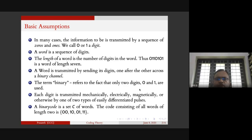A word is transmitted by sending its digits one after the other across a binary channel. What do you mean by a binary channel? The binary channel only transmits two digits: zero and one, nothing more. Each digit is transmitted mechanically, electrically, magnetically, or otherwise by one of two types of easily differentiated pulses.